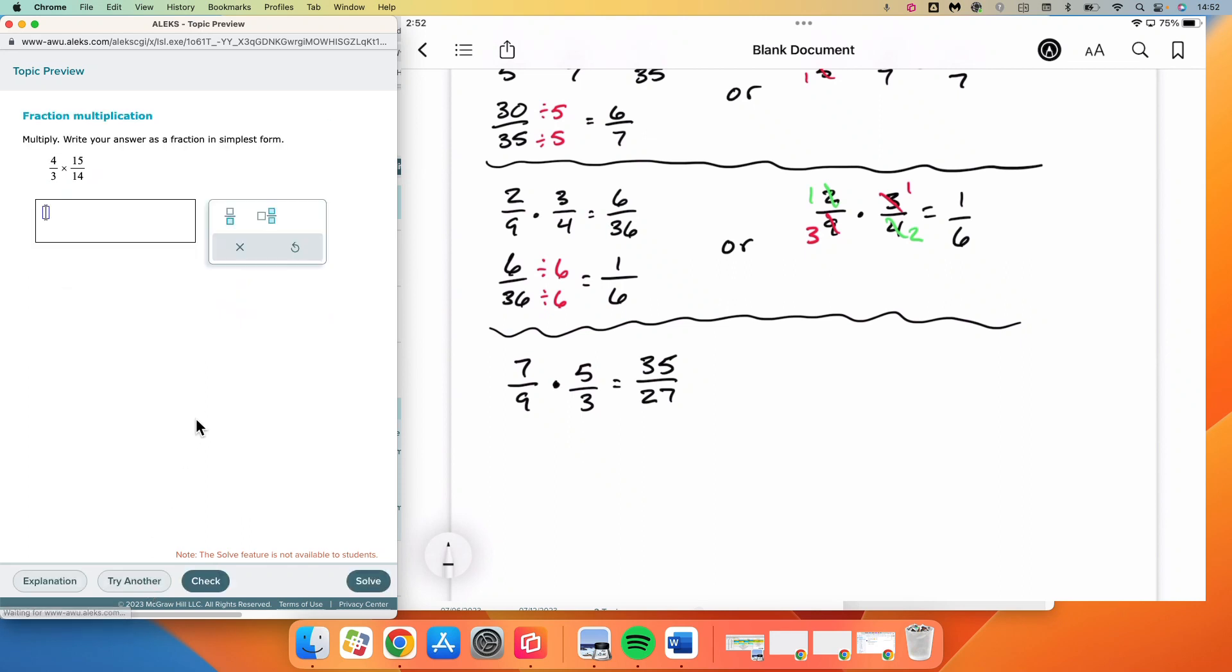And then one more. We will have 4 over 3 times 15 over 14.